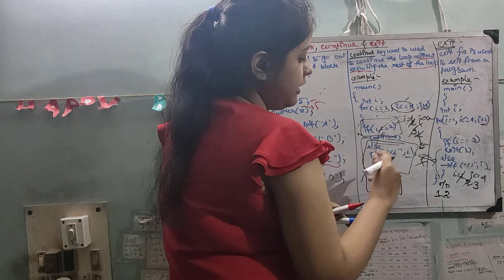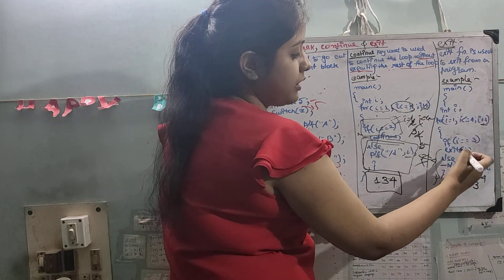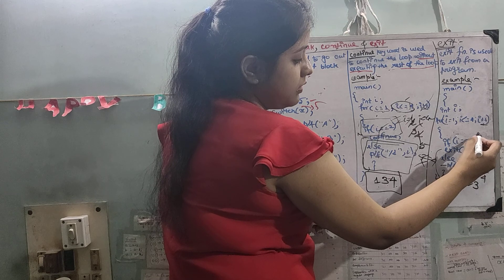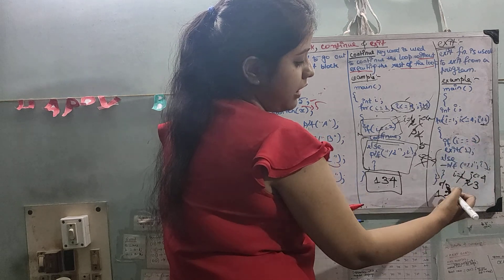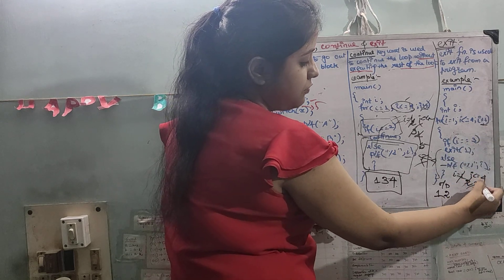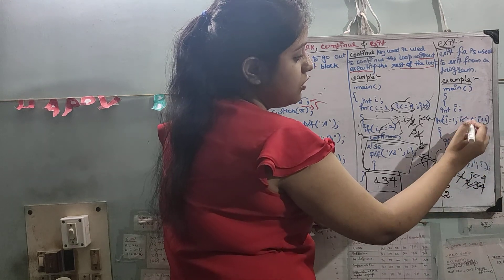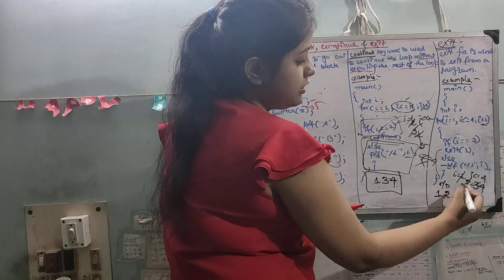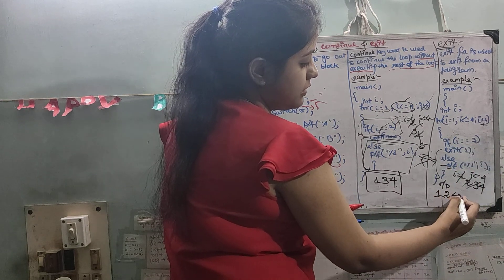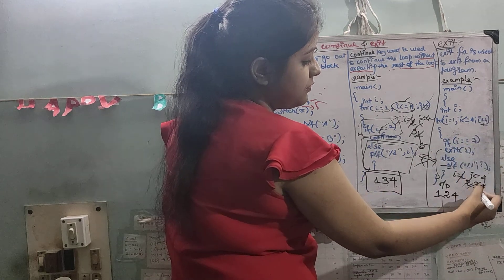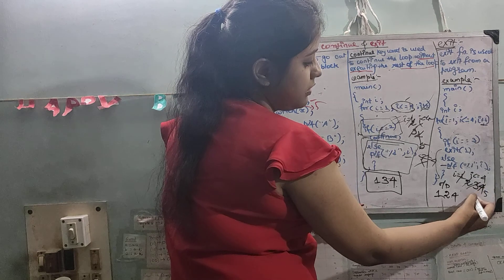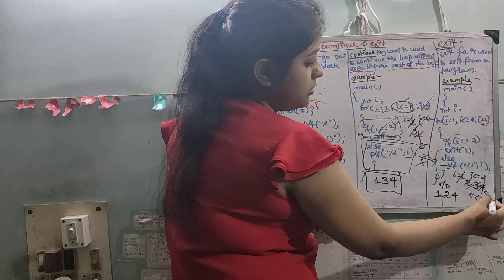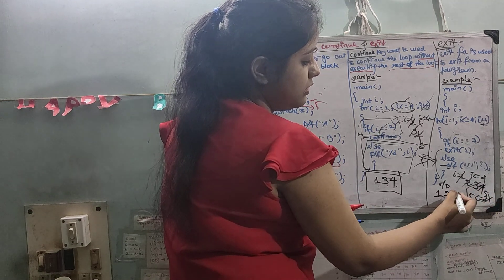But unlike continue, with exit we will not continue with the program. Then i is incremented again to 4. 4 is not equal to 3, so 4 is printed. Then 4 plus plus gives 5. 5 is not less than equals to 4, so the program is terminated. Output is 1, 2, 4.